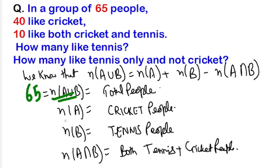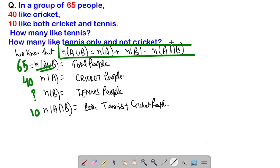As per the question, 65 is n(A∪B), the total universal number which consists of all classes of people. So 65 is n(A∪B), 40 is n(A) which is cricket people. We don't know n(B), that is tennis people, and n(A∩B) is 10.